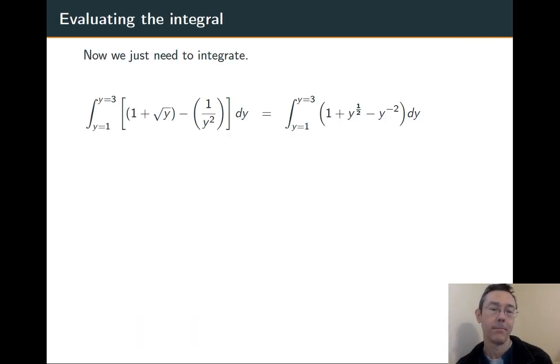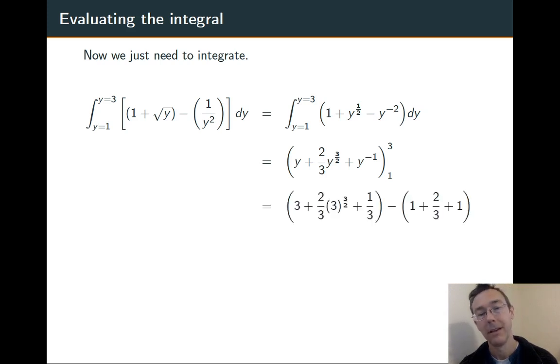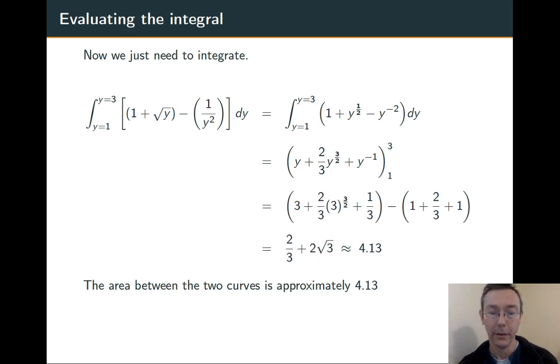Now it's routine. We're going to write that in a slightly more manageable fashion, anti-differentiate by raising up each of those powers and multiplying by the reciprocal of the new power, plug in the limits of integration, and do a little bit of simplification. Overall, we get that the area between the two curves is approximately 4.13.